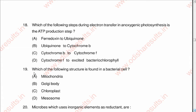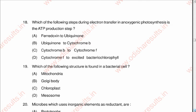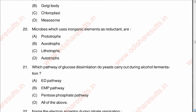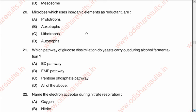Question nineteen: Which of the following structures is found in a bacterial cell? A: mitochondria, B: Golgi body, C: chloroplast, D: mesosome. The correct answer is D: mesosome. Mitochondria, Golgi body, and chloroplasts are found in eukaryotic cells, not in the bacterial cell, which is a prokaryote. Question number twenty: Microbes which use inorganic elements as reductants are A: prototrophs, B: auxotrophs, C: lithotrophs, D: autotrophs. The correct answer is C: lithotrophs.